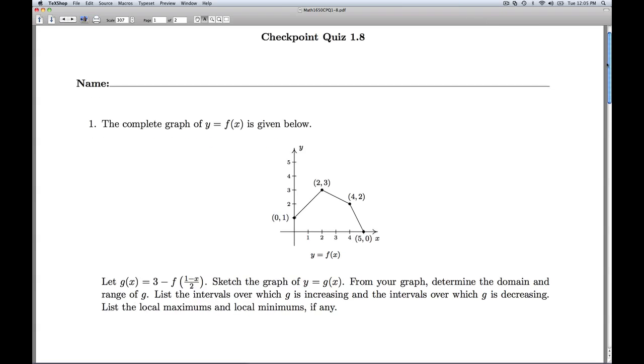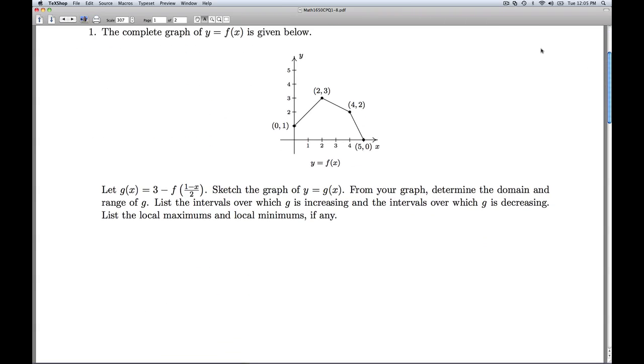Hi folks, this is Checkpoint Quiz 1.8. I'm given the complete graph of y equals f of x below, and so I have these four key points. Then I'm asked to sketch the graph of g of x, which is some modification of the function f of x. Once I get the graph of g, I'm asked to find the usual information about it.